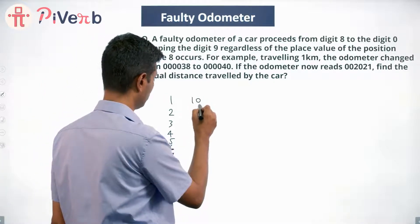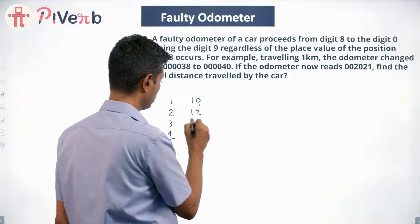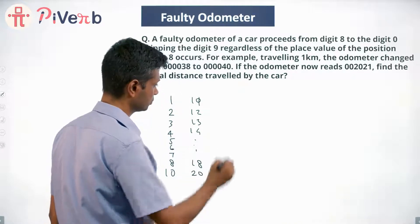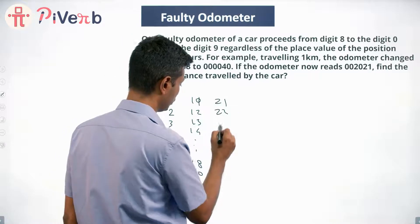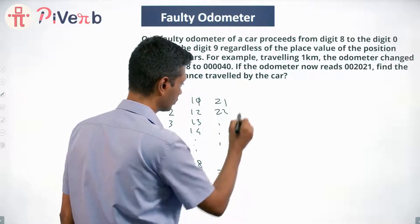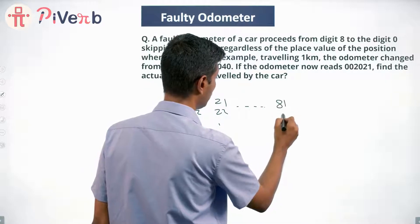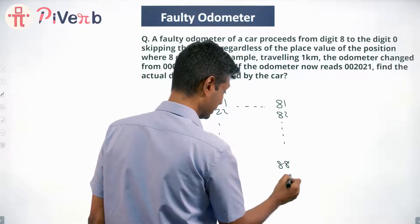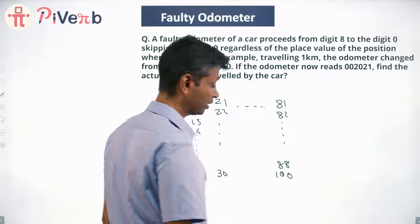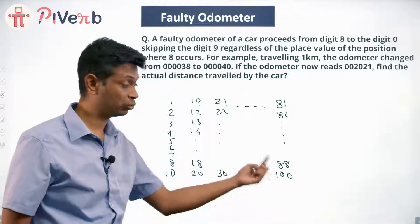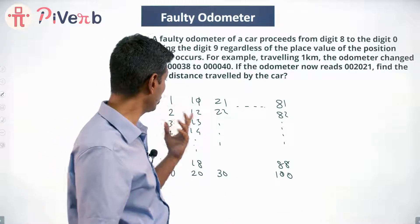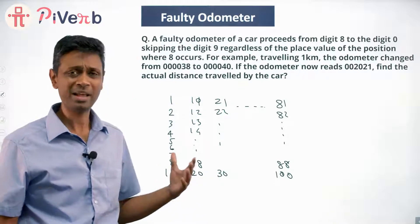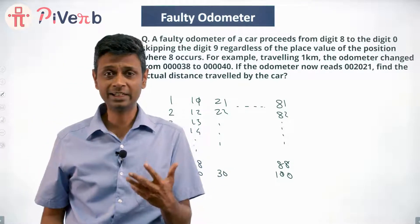And then it becomes 10, 11, 12, 13, 14, 18, 20, 21, 22, 23, all the way till 80, 81, 82, 88. This will go to 0, this will go to 0, we will have 1 in front, it becomes 100 and then 101, 102, 103. After 108, there is basically no 9 in this world.